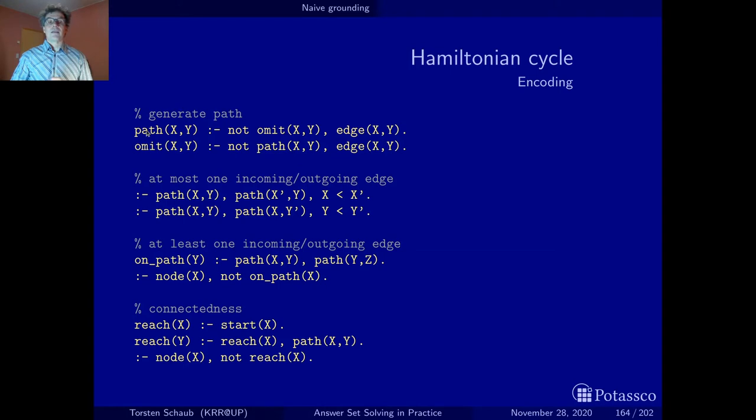And this is more or less our Hamiltonian cycle, which is modeled by an even loop. So x, y belongs to the paths if it is not omitted, and if it is not on the paths, it has been omitted. And since we have here an even cycle through these guys, you see that here, pass, not omit, omit, not pass, pass, we more or less get for each edge, which we have here, either that it's on the path, or it has been omitted. And this is our guess.